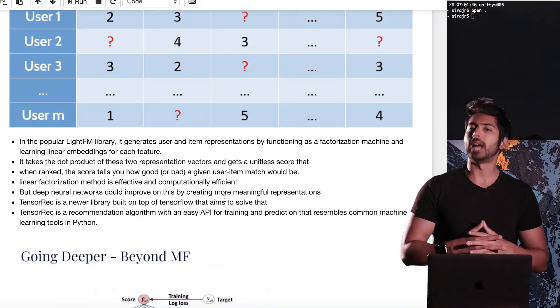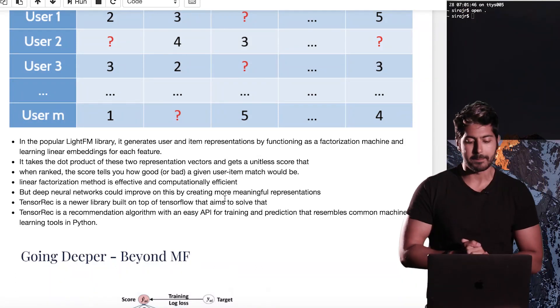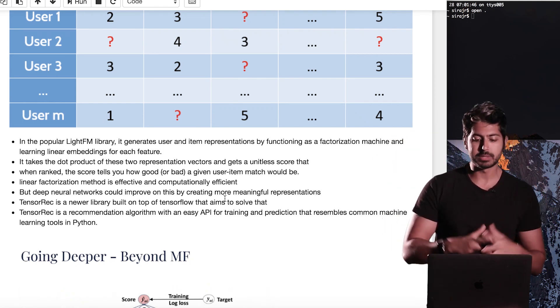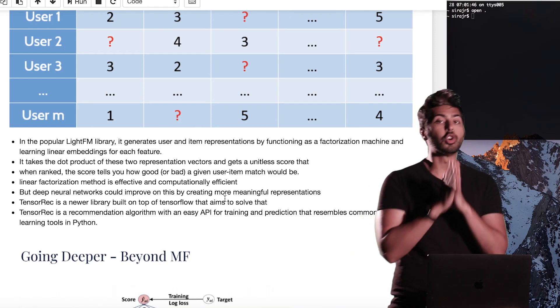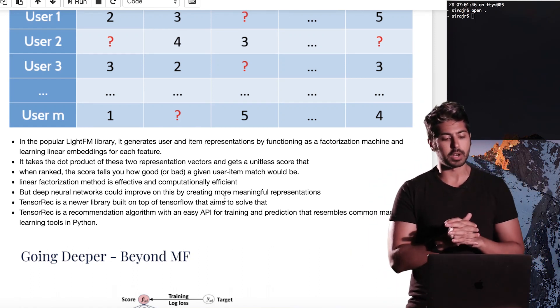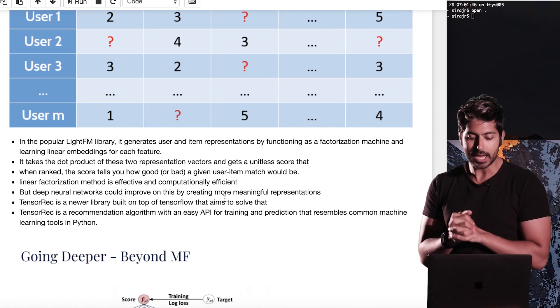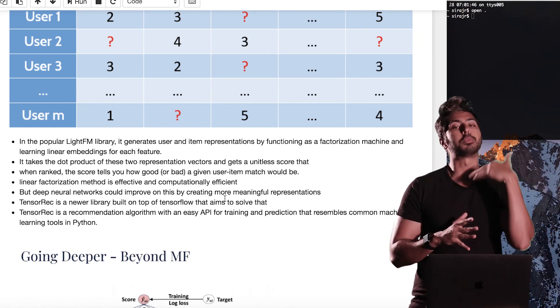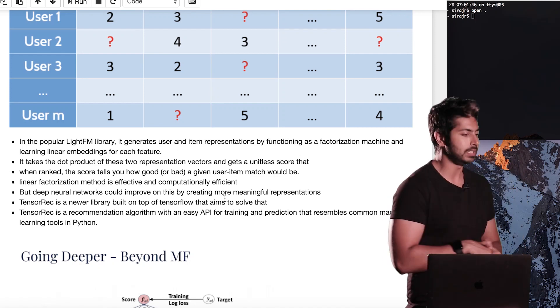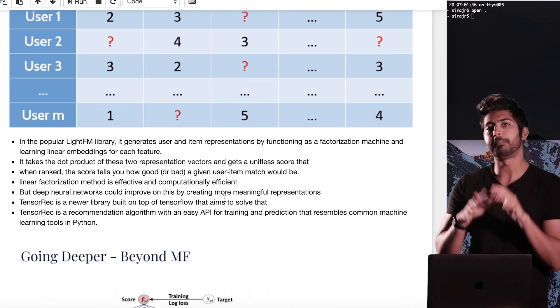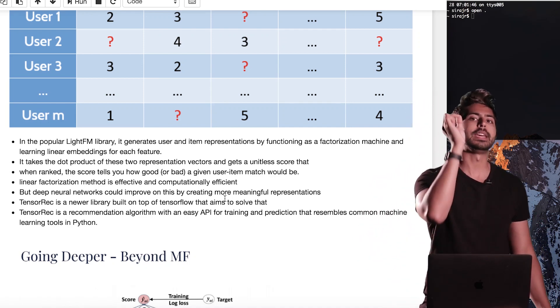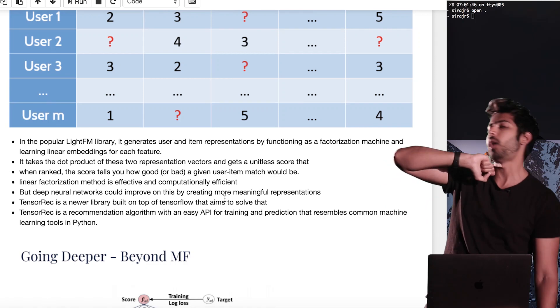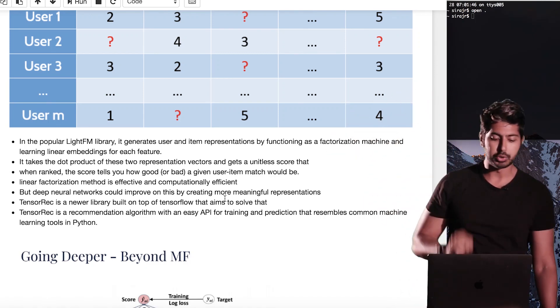And so a popular library to do this has been light.fm. It generates user and item representations by functioning as factorization machines and learning the linear embeddings for each feature. It then takes a dot product of each of these two representation vectors and gets a score. But with deep neural networks, we can improve on this by creating more meaningful representations. Deep neural networks outperform all other machine learning models when it comes to learning features if we have enough data and computing power.